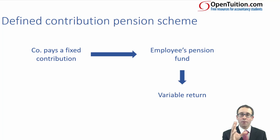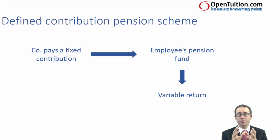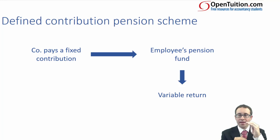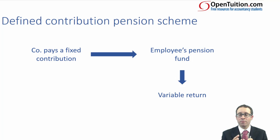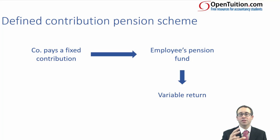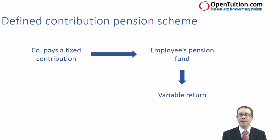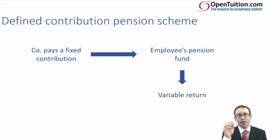The key point is that whatever the company pays into your pension fund, you then get a variable return. There's no risk attached to the company — they pay an amount into your pension fund, and you run the risk of that fund going up or going down. The higher it gets, the more return you get. If it falls in value, you get much less. So the risk is very much with the employee, with no risk at all associated with the company. If you get to retirement and your pension fund has fallen in value, you can't go back to the company and request more pension — they have transferred their risk to you.